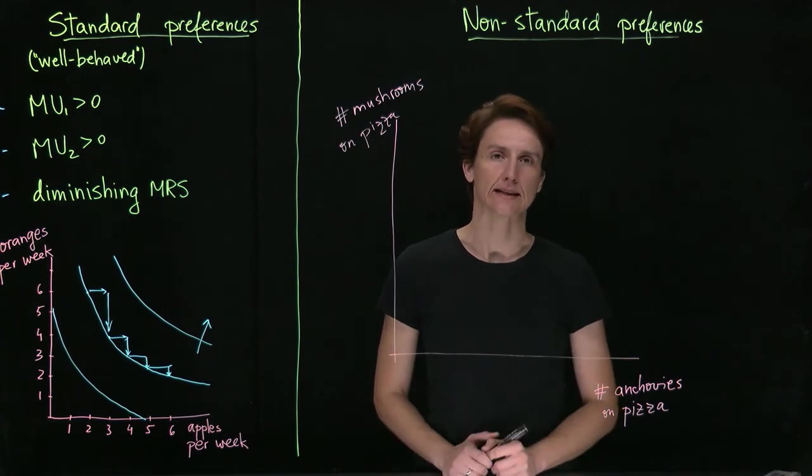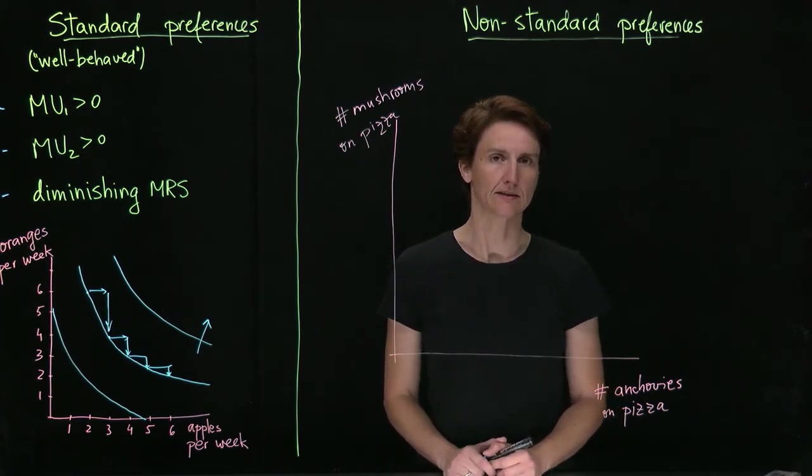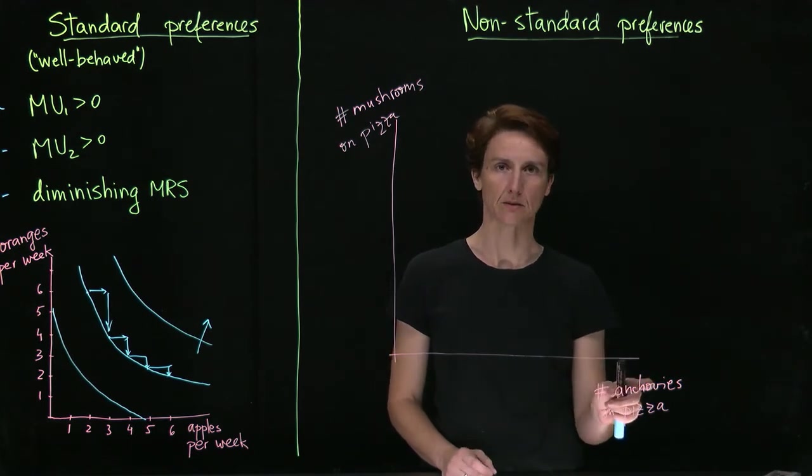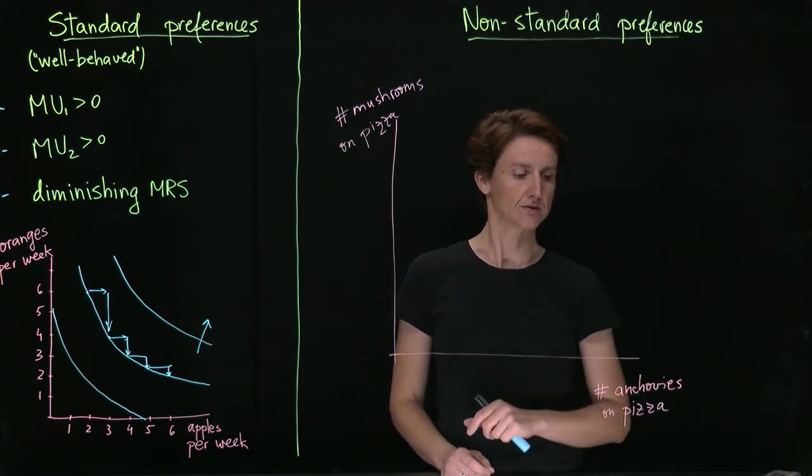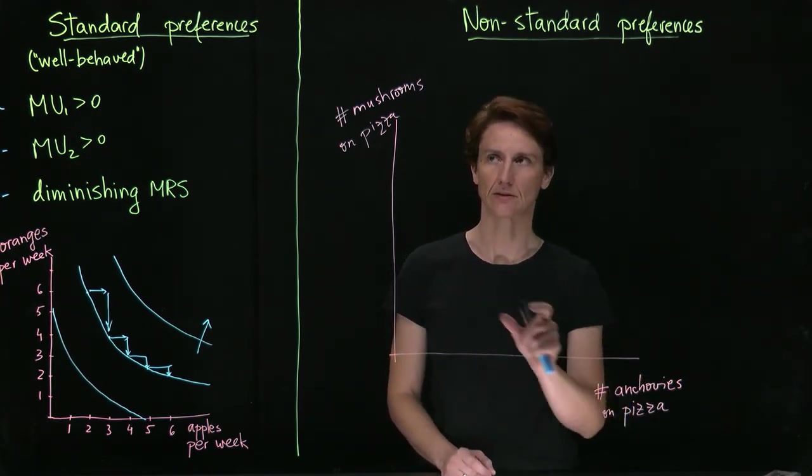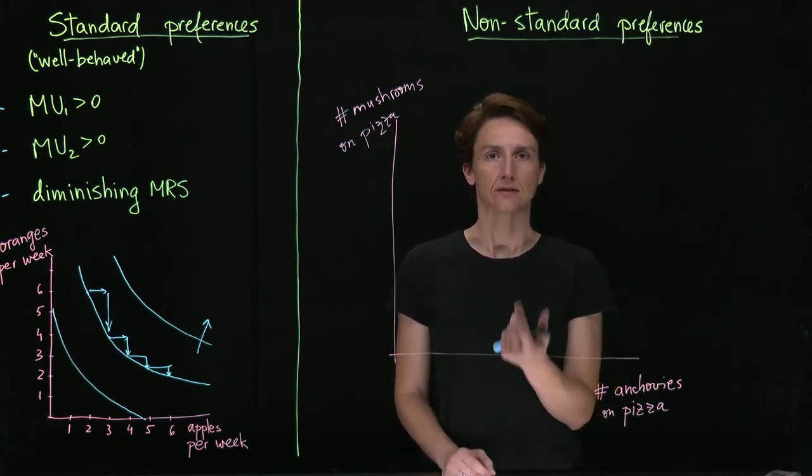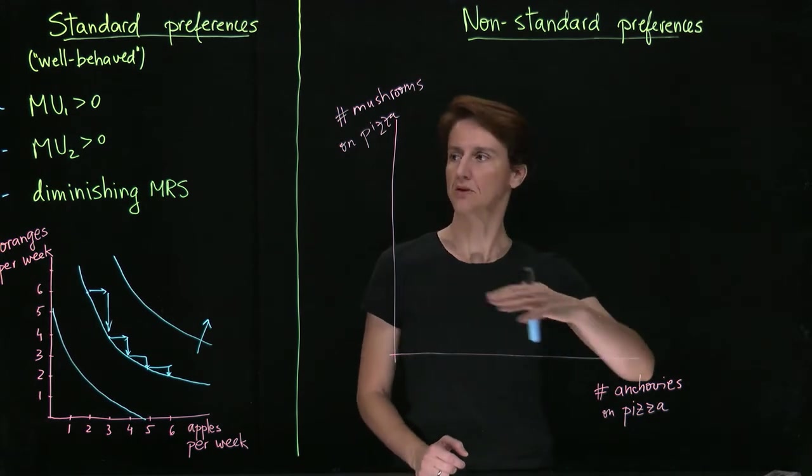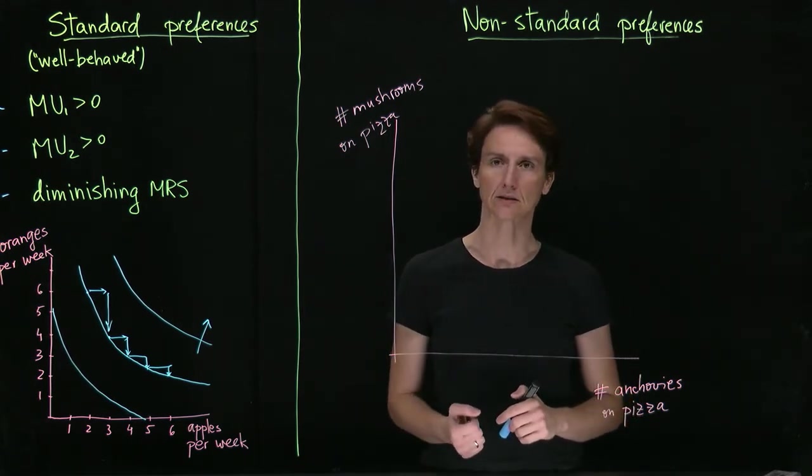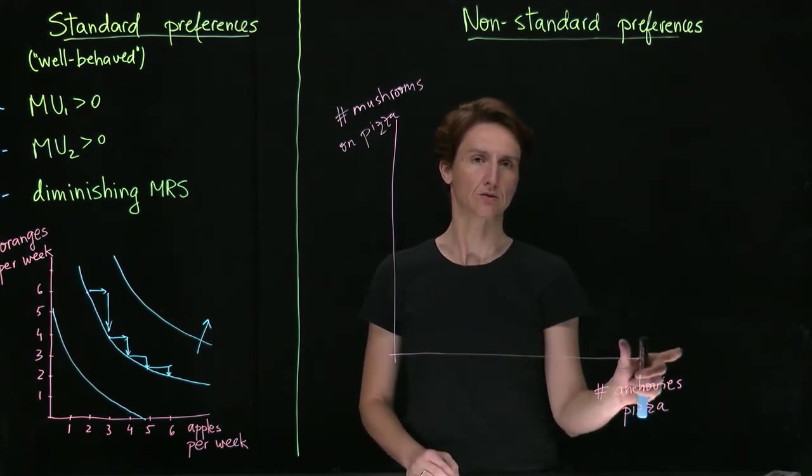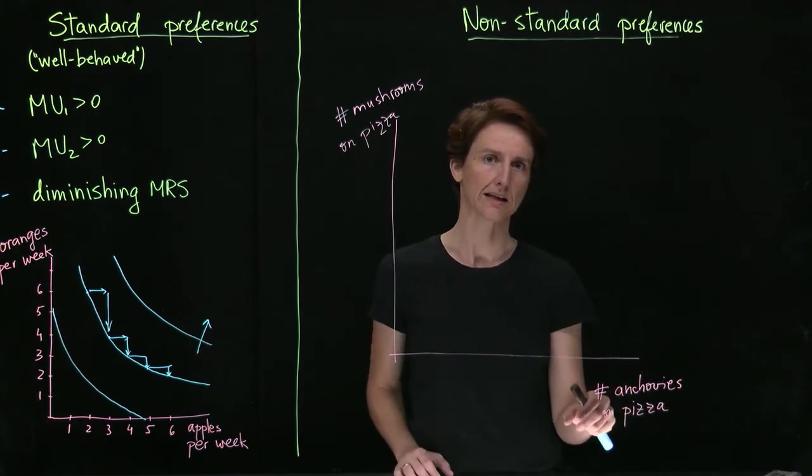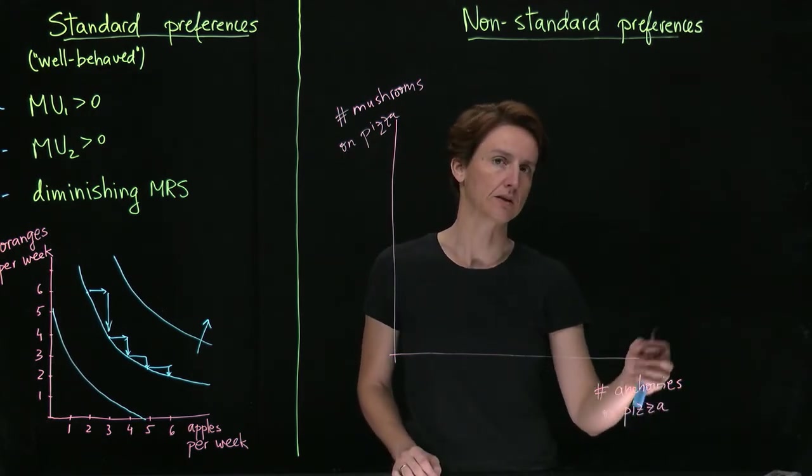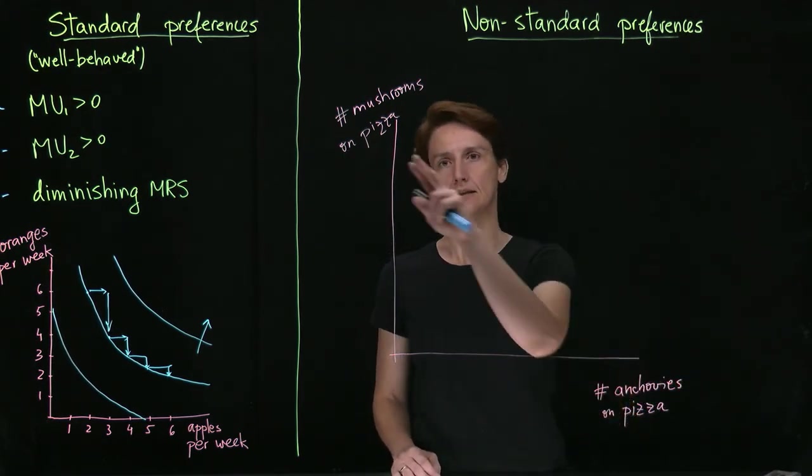Consider the following example. Suppose a group of friends is debating the value of various pizza toppings, and two of the more contested ones are anchovies and mushrooms. Some people might like both and in particular might have diminishing MRS the same way we've discussed here, so that the more anchovies they have and the fewer mushrooms, the less value they place on one extra anchovy, and the other way around.